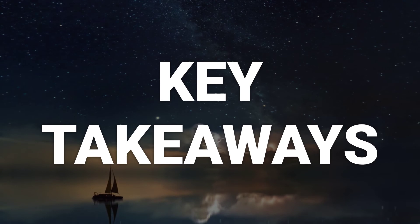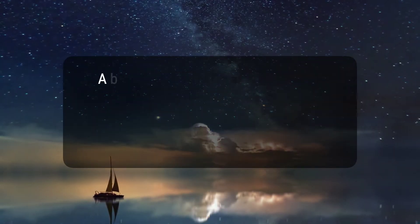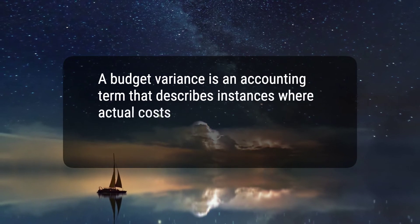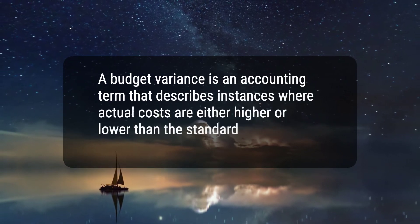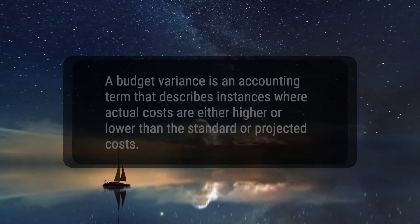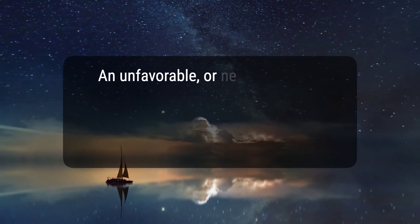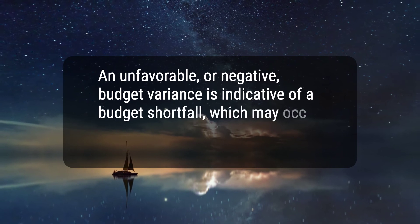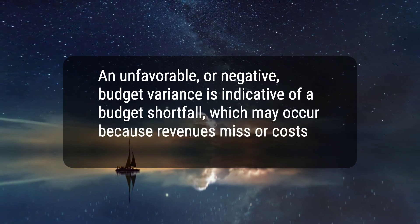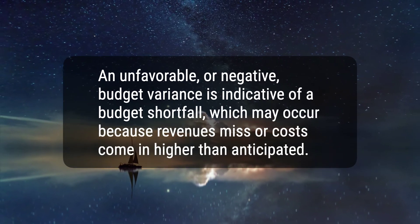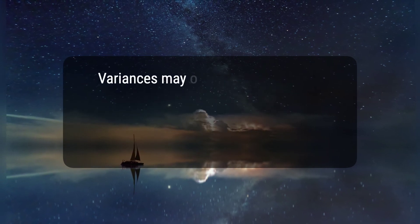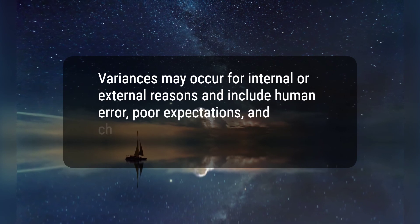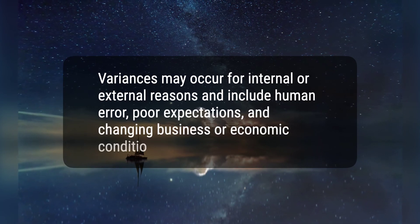Here are three key takeaways. 1. A budget variance is an accounting term that describes instances where actual costs are either higher or lower than the standard or projected costs. 2. An unfavorable, or negative, budget variance is indicative of a budget shortfall, which may occur because revenues miss or costs come in higher than anticipated. 3. Variances may occur for internal or external reasons and include human error, poor expectations, and changing business or economic conditions.